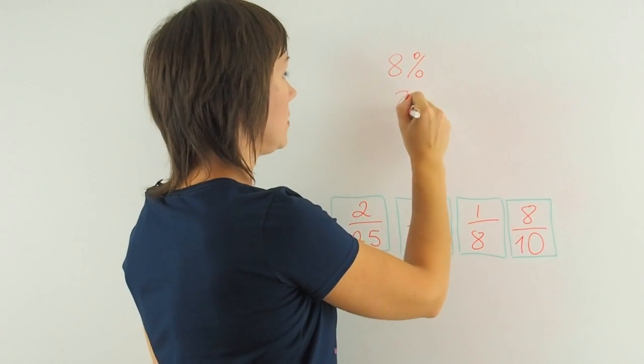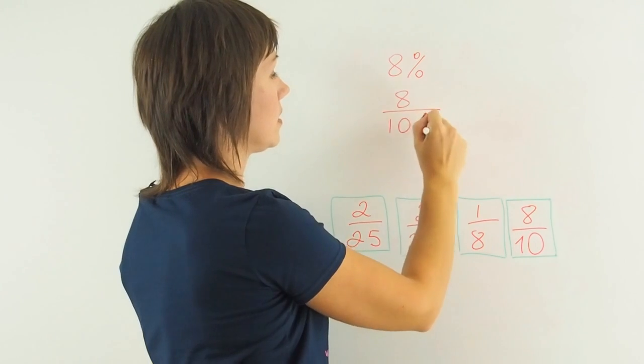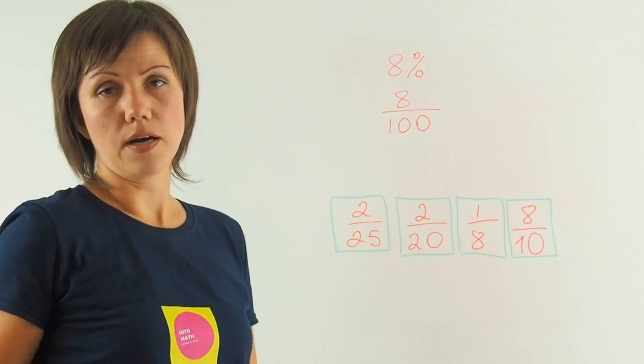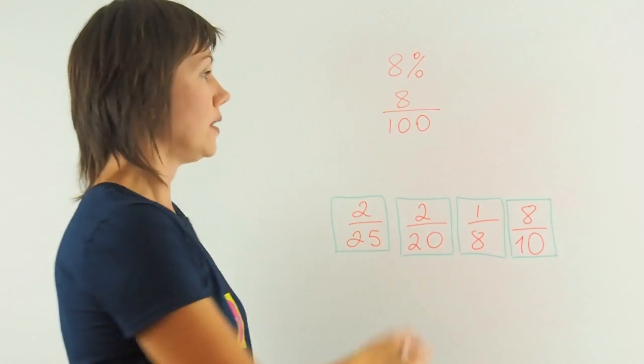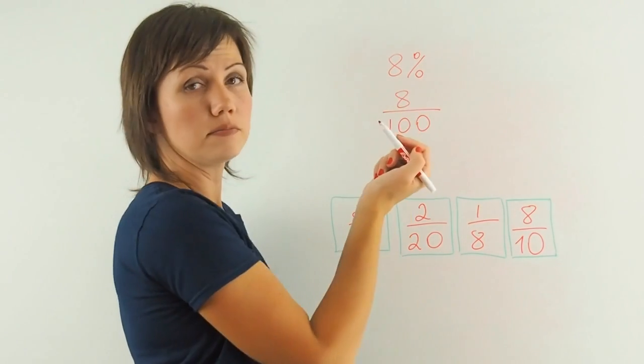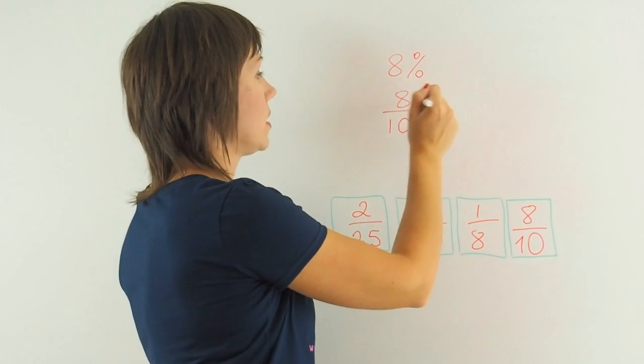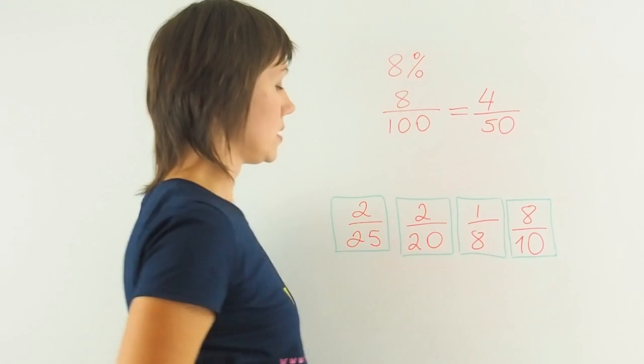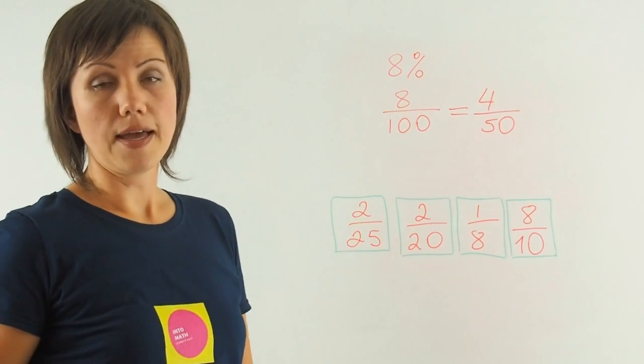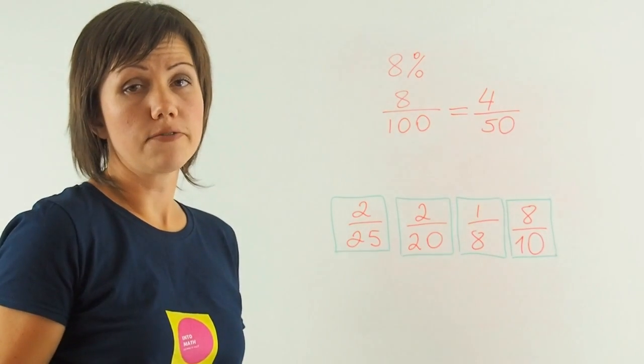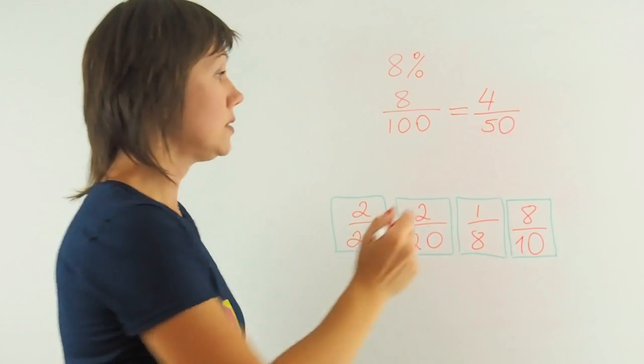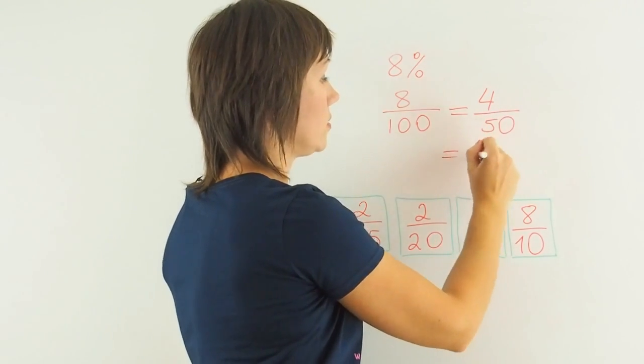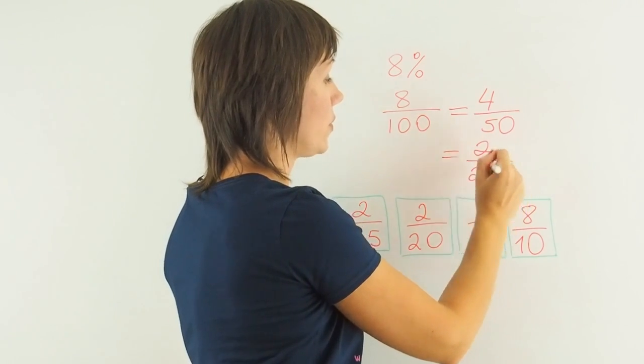So if my total is 100, then I have 8/100 as a fraction of 100%. And I can reduce it by 2 and I'll get 4 over 50. And if I continue reducing this further, then I will divide it again by 2 and I'll get 2 over 25.